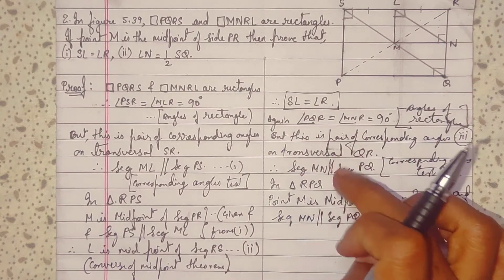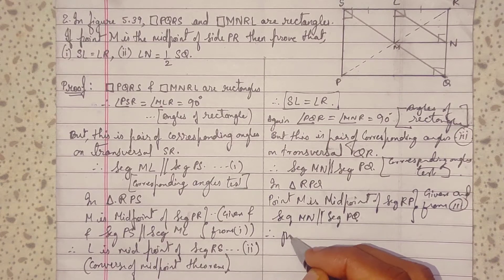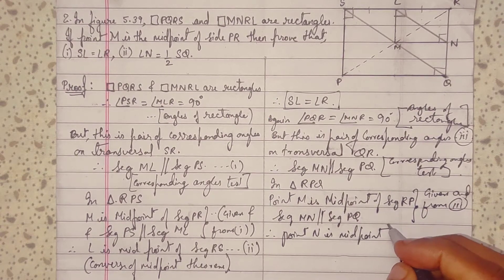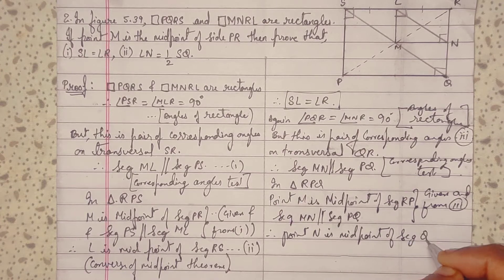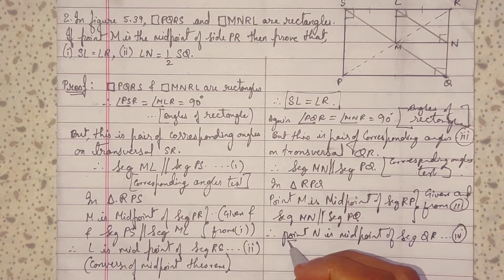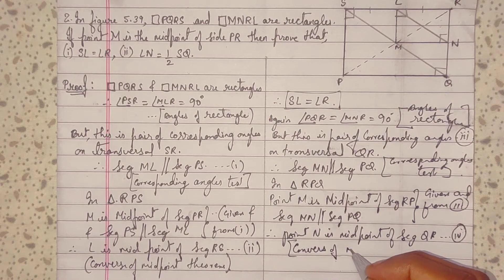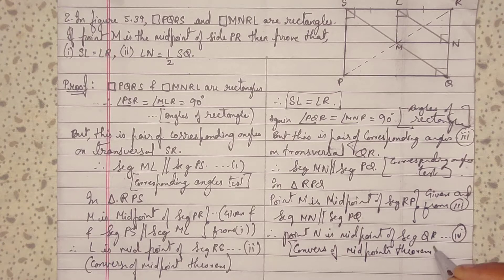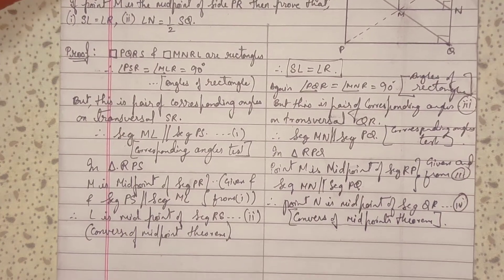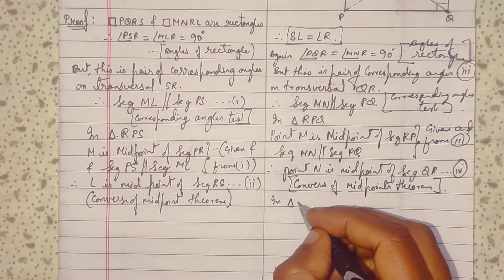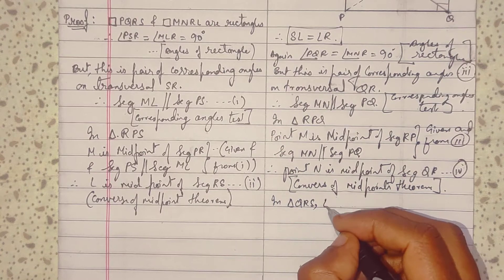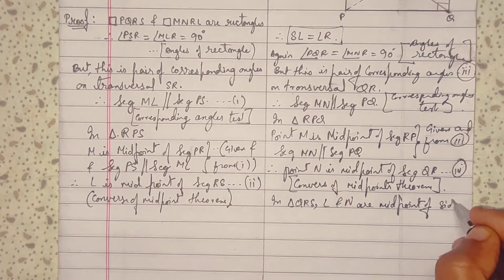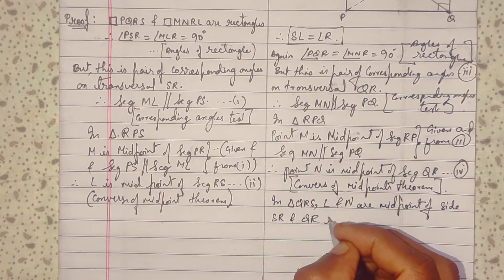In triangle RPQ, point M is the midpoint of seg RP, and seg MN is parallel to seg PQ — this is given and proved from step 3. Therefore, point N is the midpoint of seg QR by the converse of the midpoint theorem.